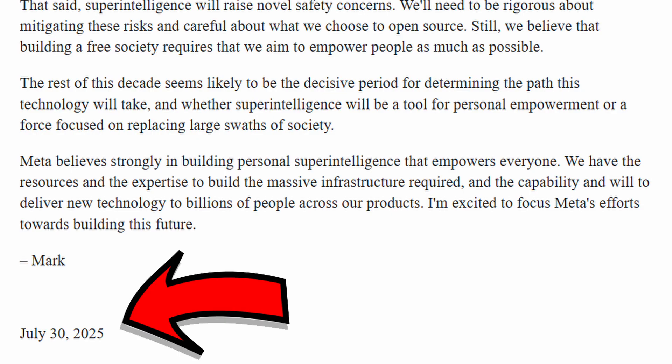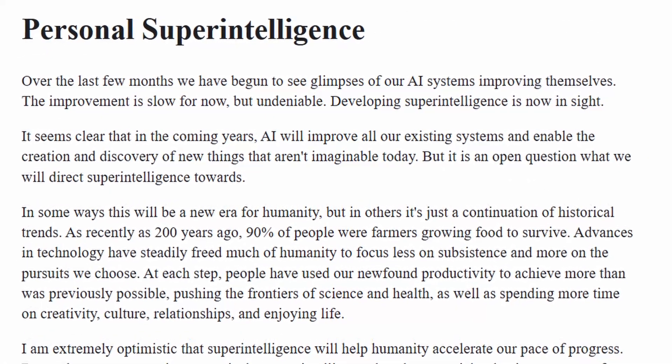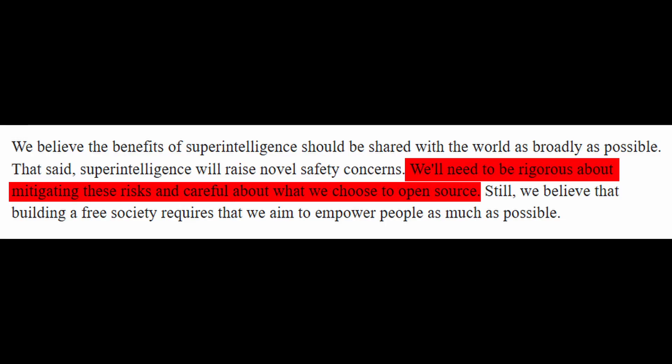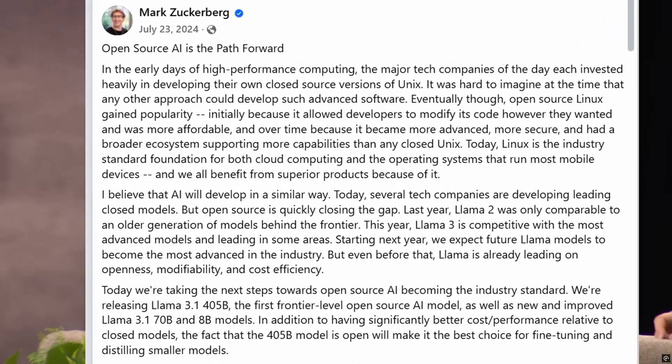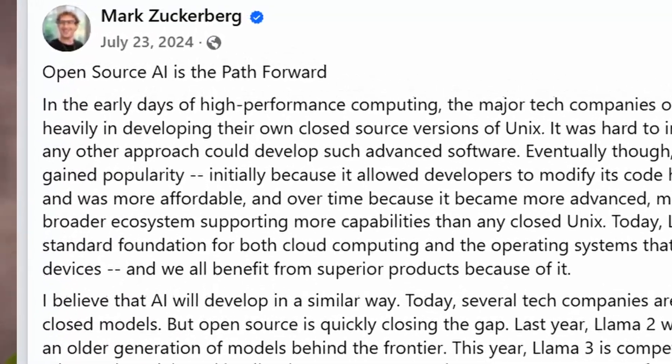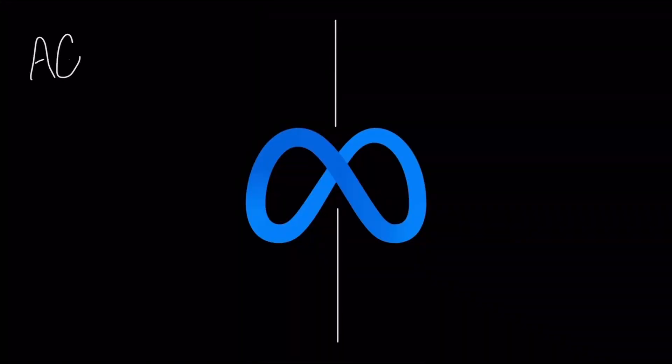But the real breakthrough might be happening in the hands of Meta. On July 30th, Zuck posted his ASI vision on Meta, also hinting that they are backtracking on open source releases, which makes sense, but it's peak irony for a guy that spent a year preaching that open source is the path forward. Meta is doing everything they can for AGI.